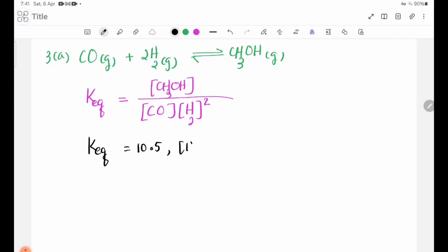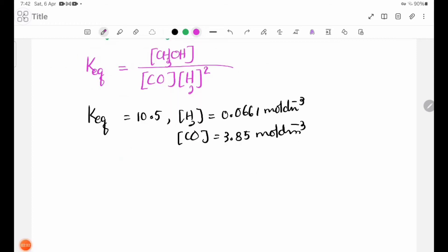H2 concentration equals 0.0661 molar per dm cubed. CO concentration equals 3.85 molar per dm cubed.